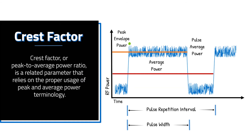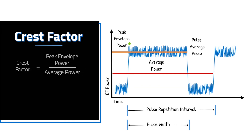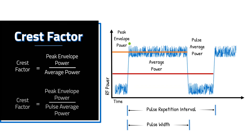Crest factor, or peak to average power ratio, is a related parameter that relies on the proper usage of peak and average power terminology. For instance, crest factor can be the ratio of the peak envelope power to either the average power over the PRI or only the pulse.